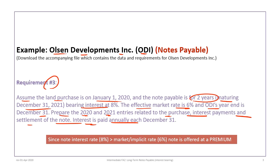Similar to the note in Tutorial 1B, we have a situation where the interest rate on the note of eight percent is greater than the market rate or implicit rate. This means the note is offered at a premium. The previous tutorial was based on a discount scenario; this time it is based on a premium.